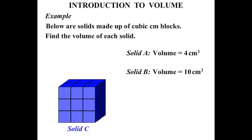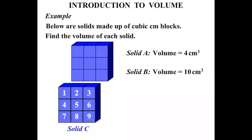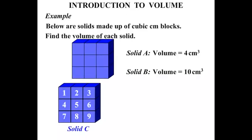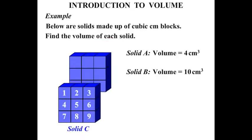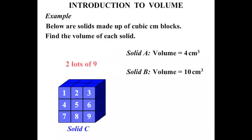Okay, solid C. Let's count the front there. 1, 2, 3, 4, 5, 6, 7, 8, 9. All right, so that has 9 cm³ frontage. You notice that at the back too, that would also have 9 cm³. All right, so in other words, what have we got? We've got 2 lots of 9. And 2 times 9 is 18. So solid C has a volume equal to 18 cm³.